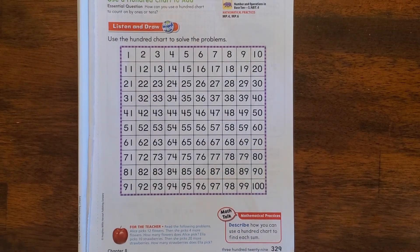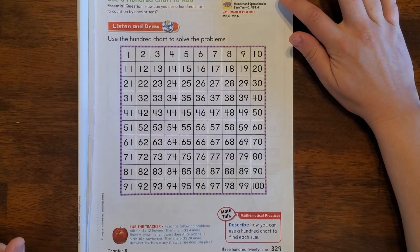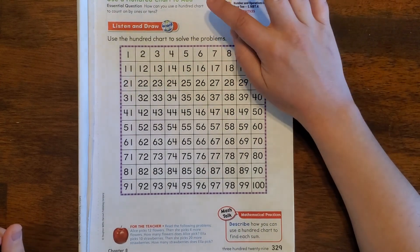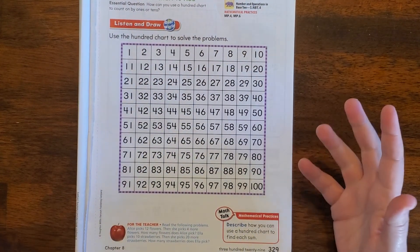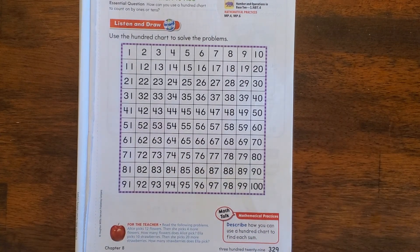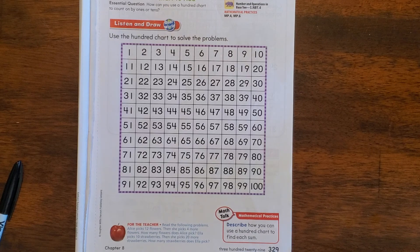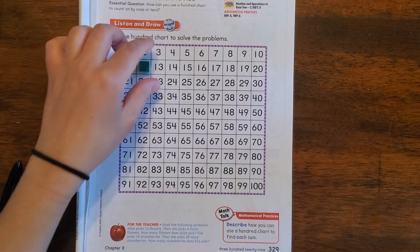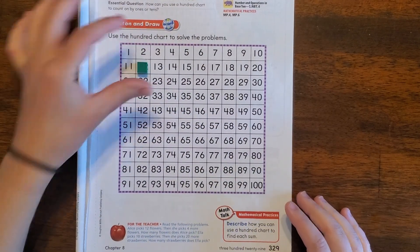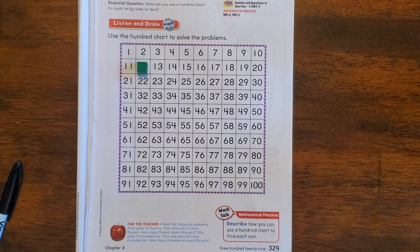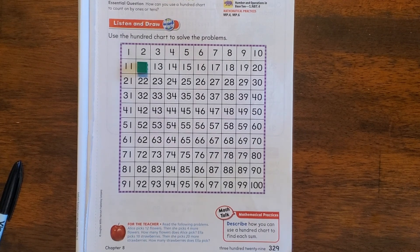Hey there friends, thanks for joining me for math today. Today we're going to do Lesson 8.4, which is using a hundred chart in order to add. Alice is going to pick 12 flowers, so here I'm going to start at the number 12 right here.